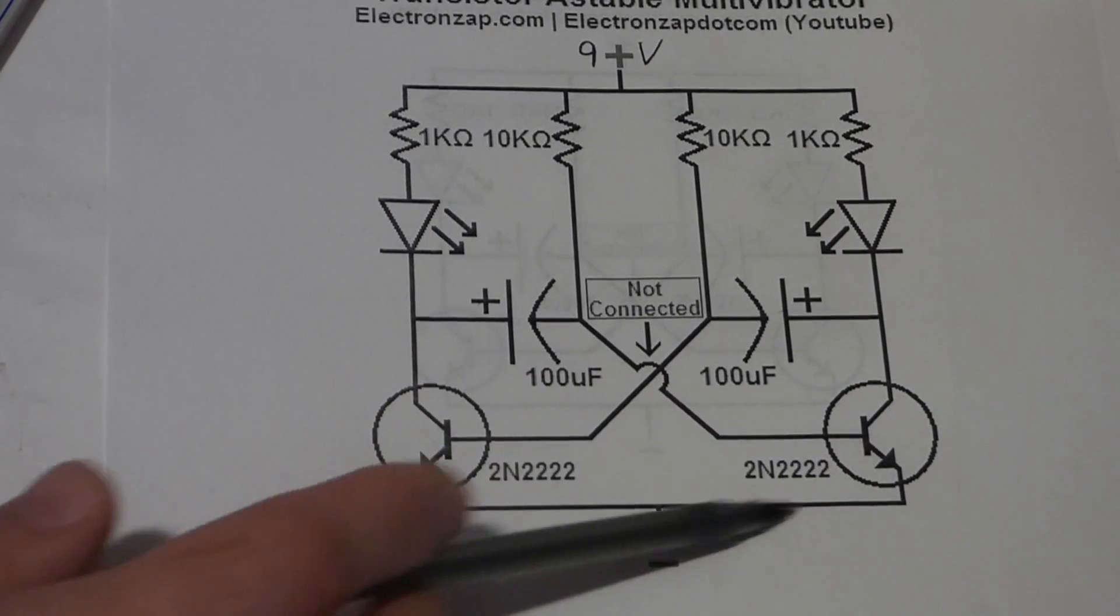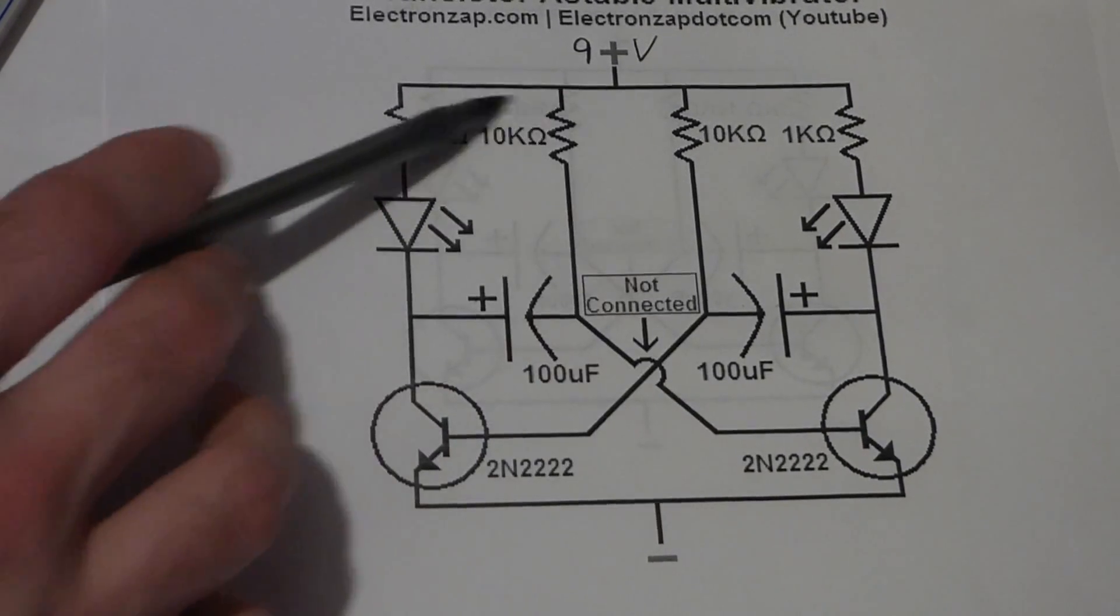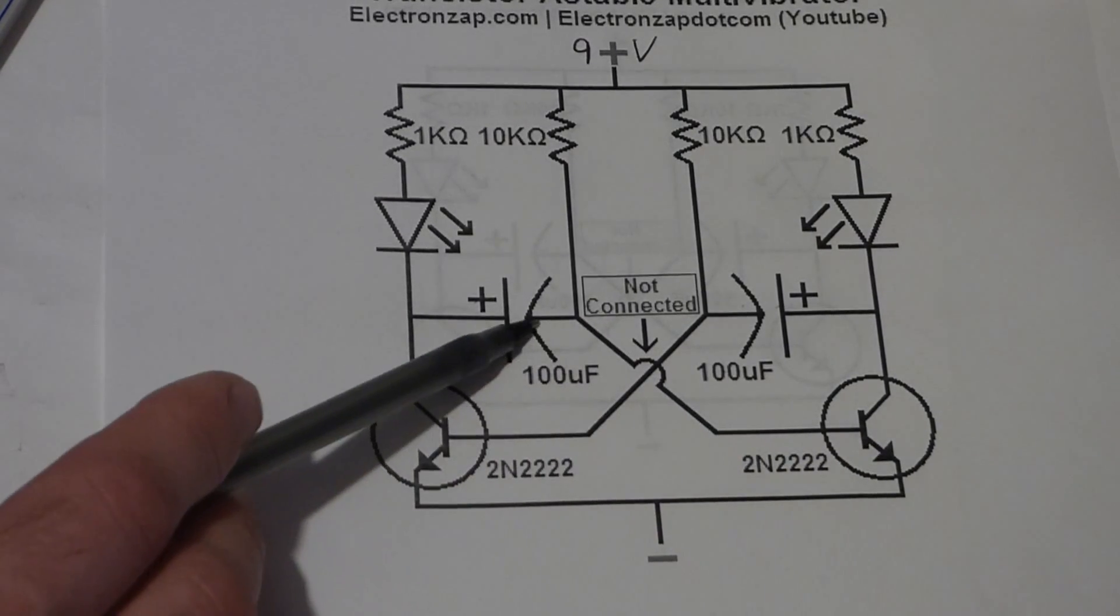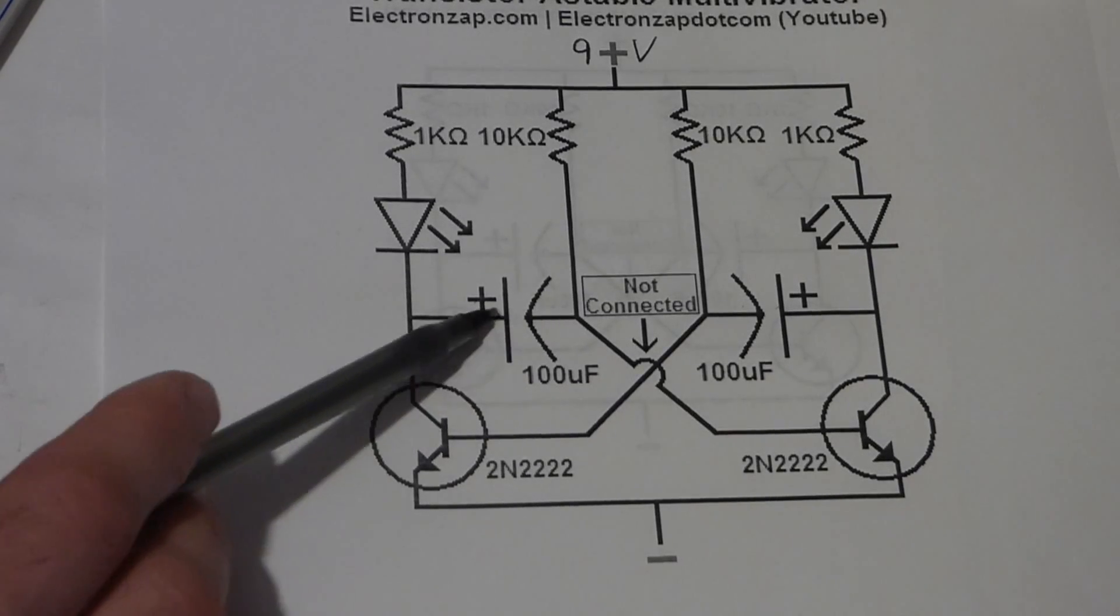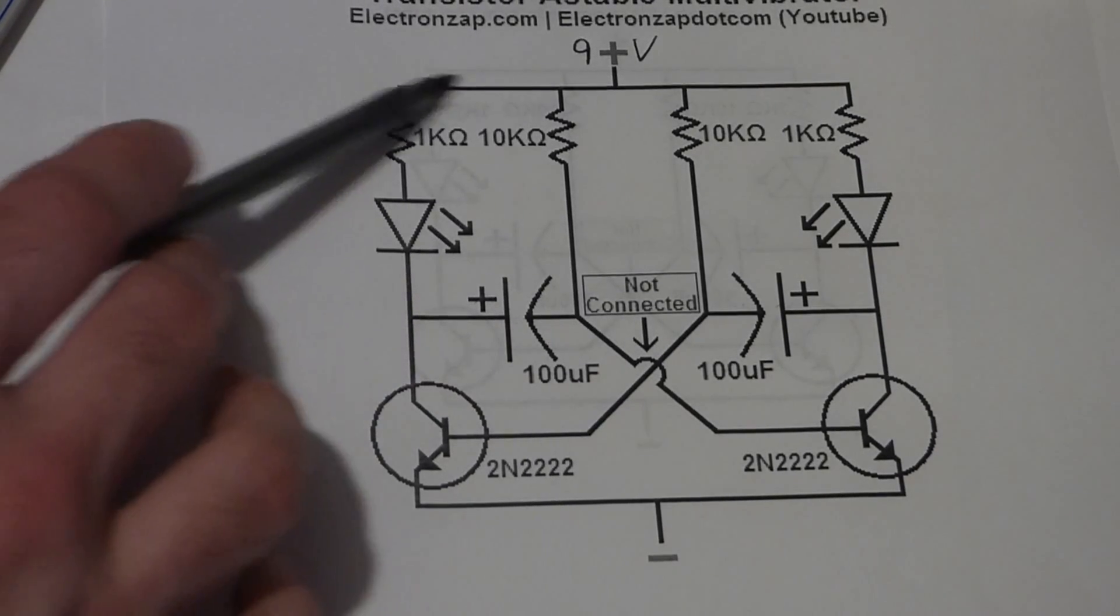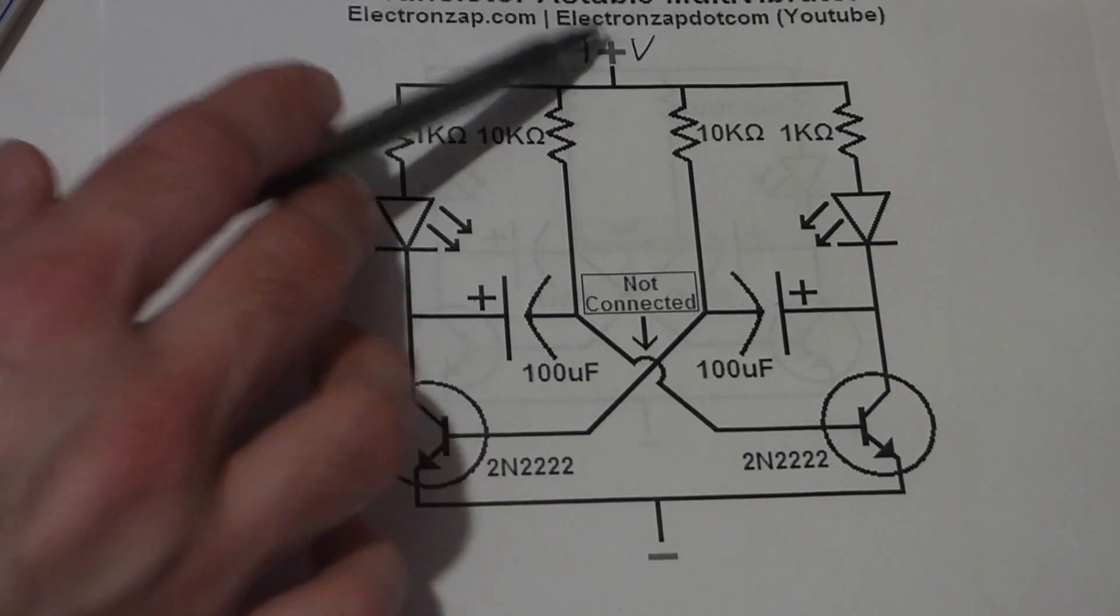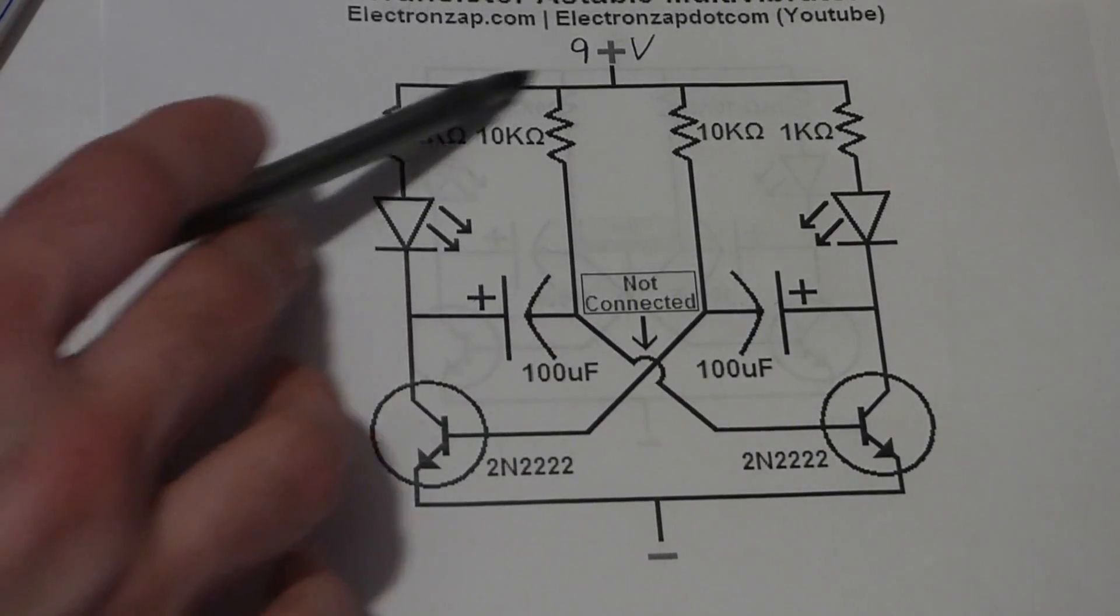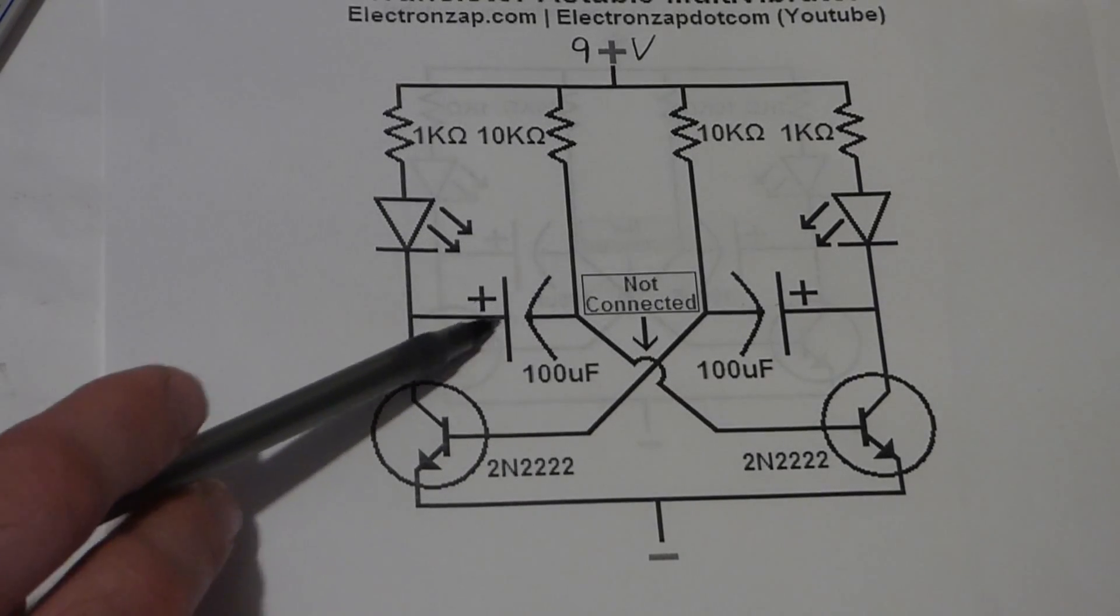So when one transistor is turned on, it kind of randomly starts with one of them. You can see we have a negative path here to the negative side of the capacitor. Now the positive side of the capacitor comes to the positive side of the power source there. So we have a complete circuit here while the capacitor is charging.